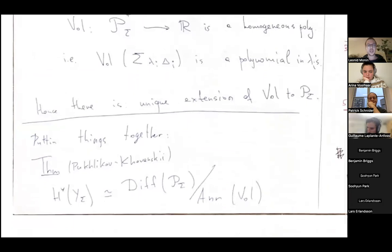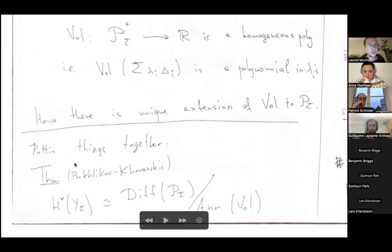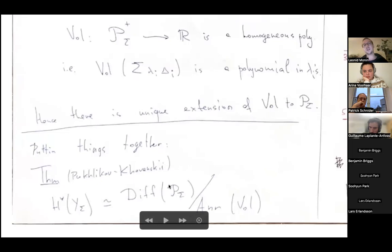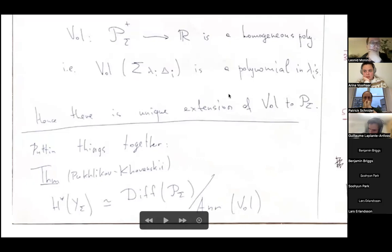To summarize: the cohomology ring of a toric variety is the quotient of differential operators on the space of virtual polytopes (with the given normal fan) by the annihilator of the volume polynomial, since by the Bernstein-Kushnirenko theorem this self-intersection polynomial equals the volume polynomial on the space of polytopes.